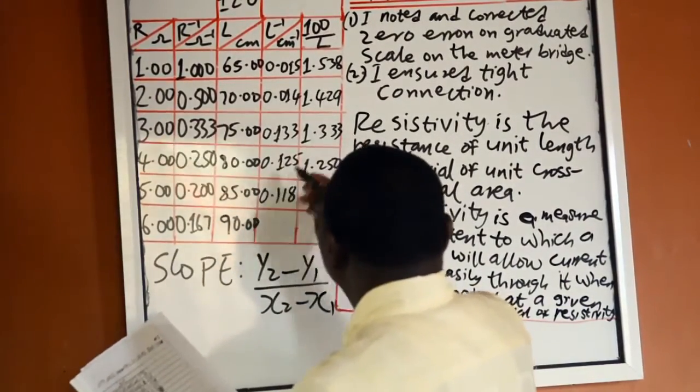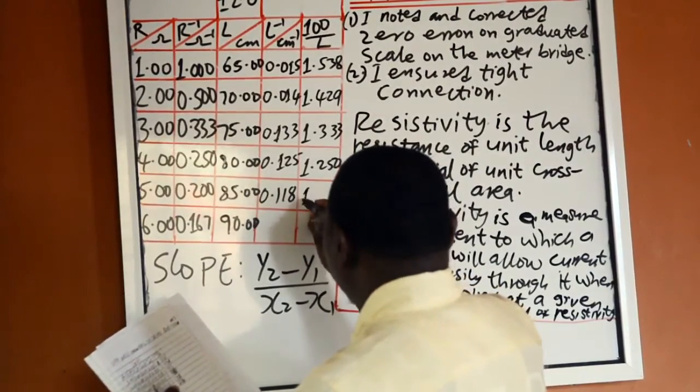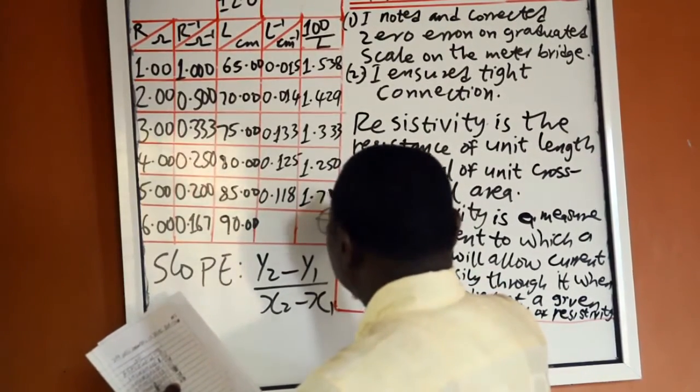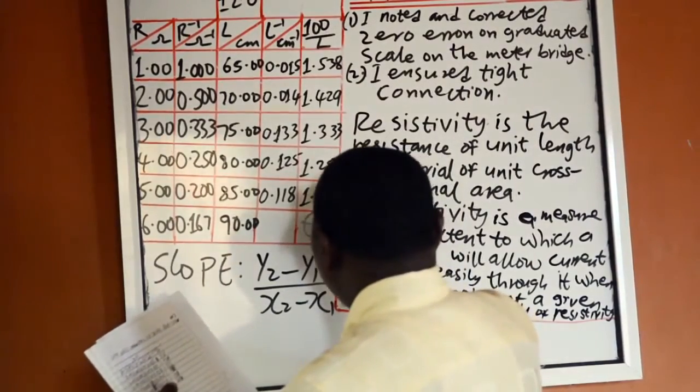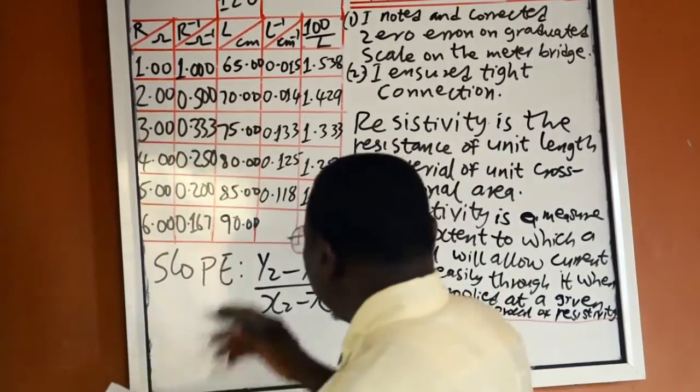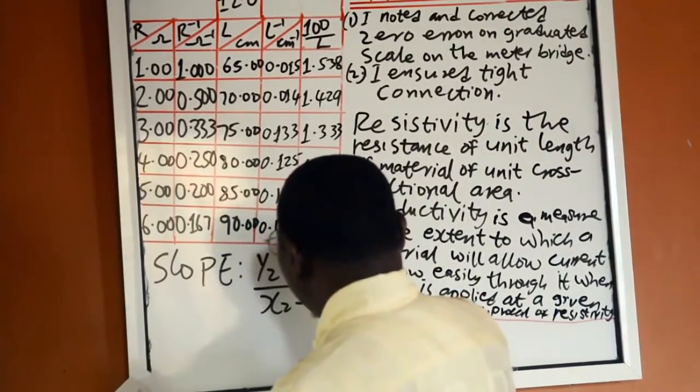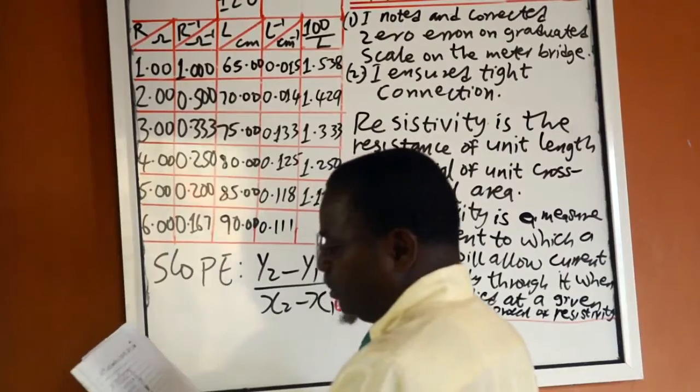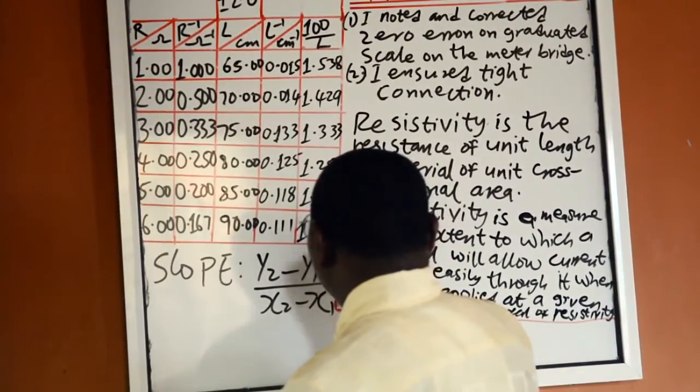1 over 90 is equal to 0.0111, and 100 over 90 is equal to 1.111.